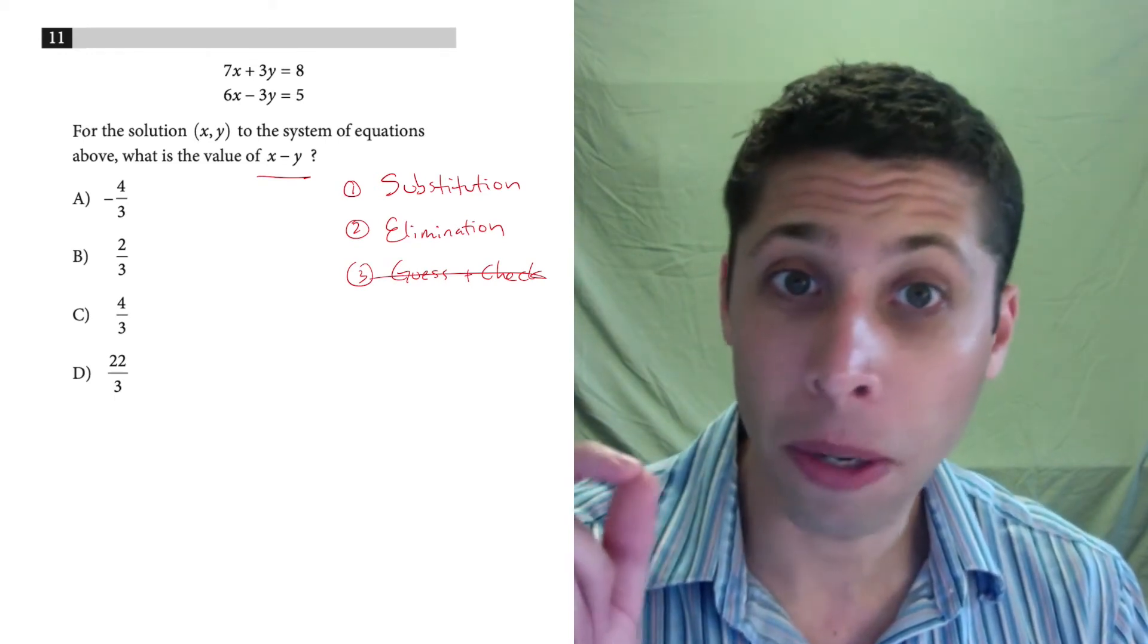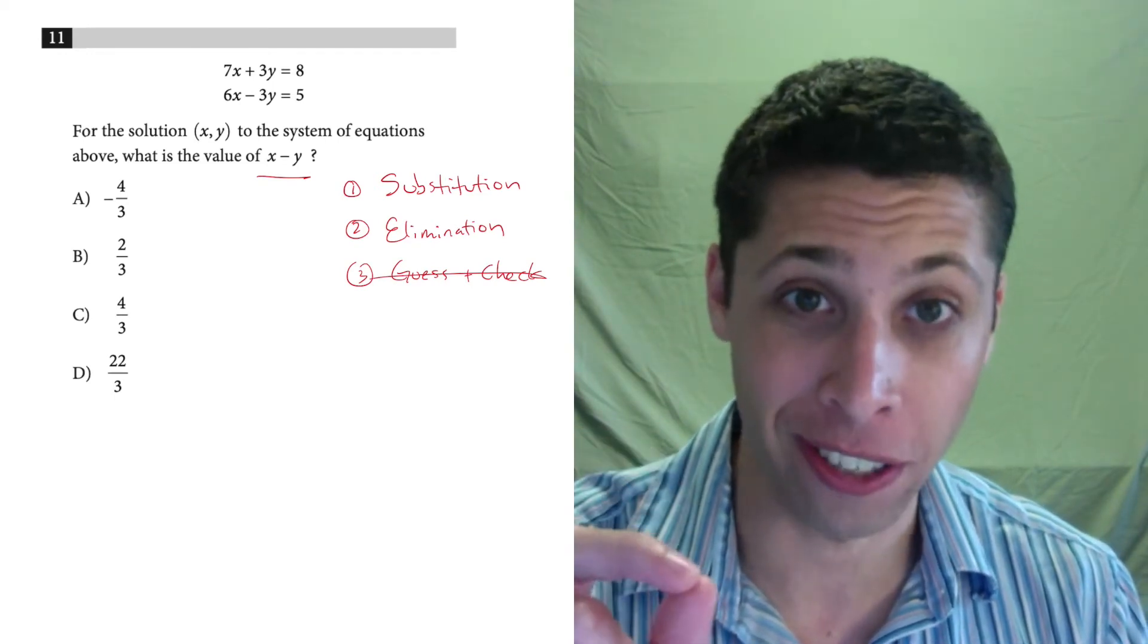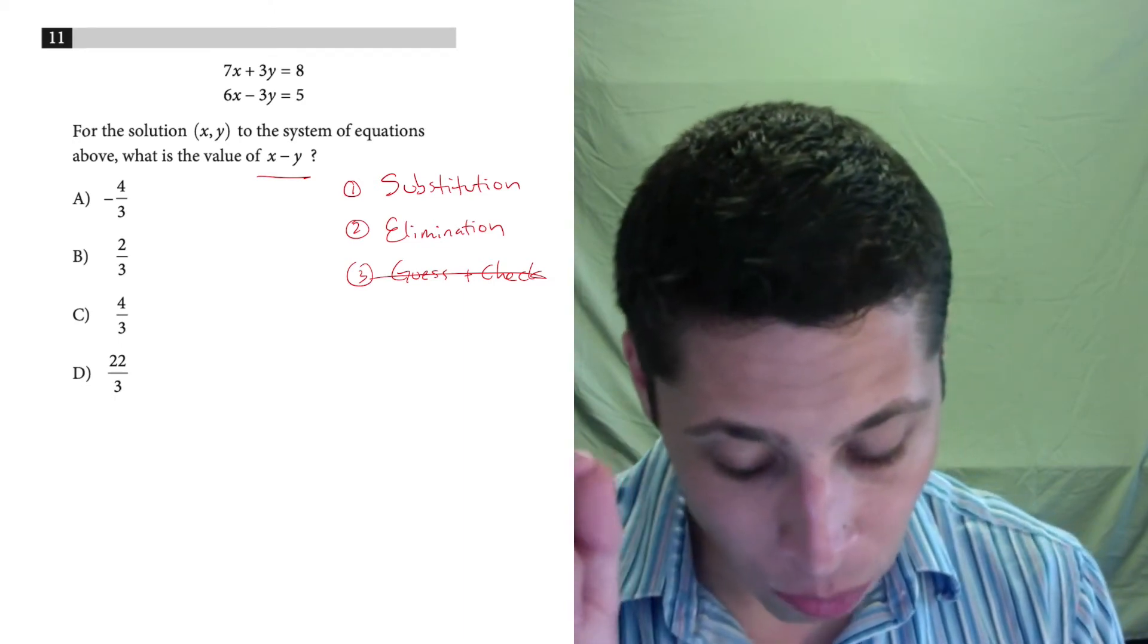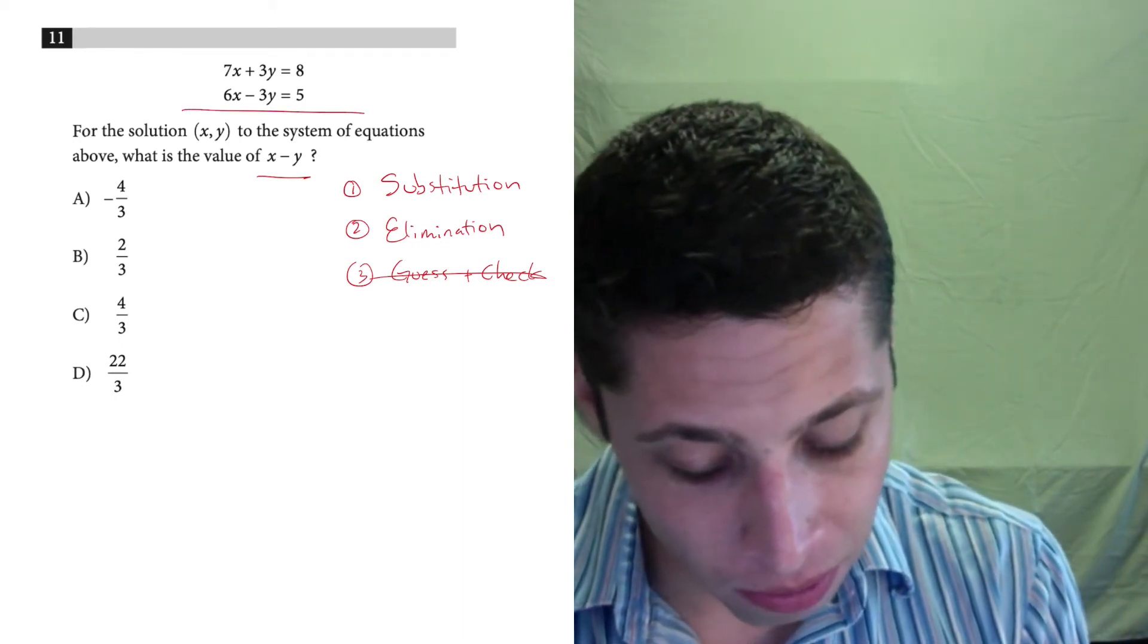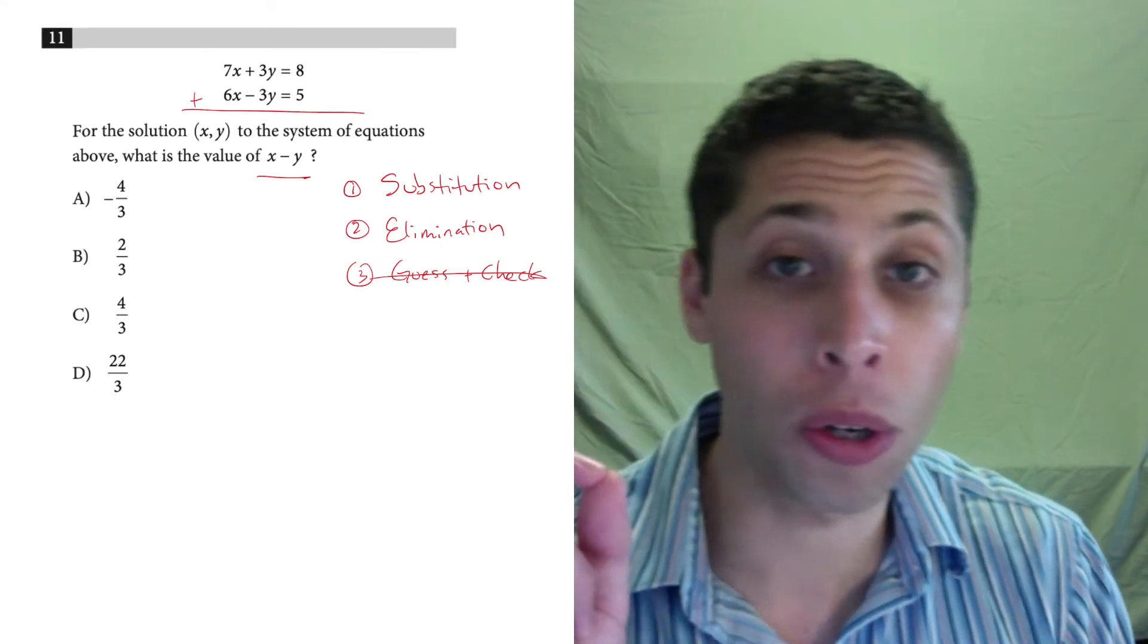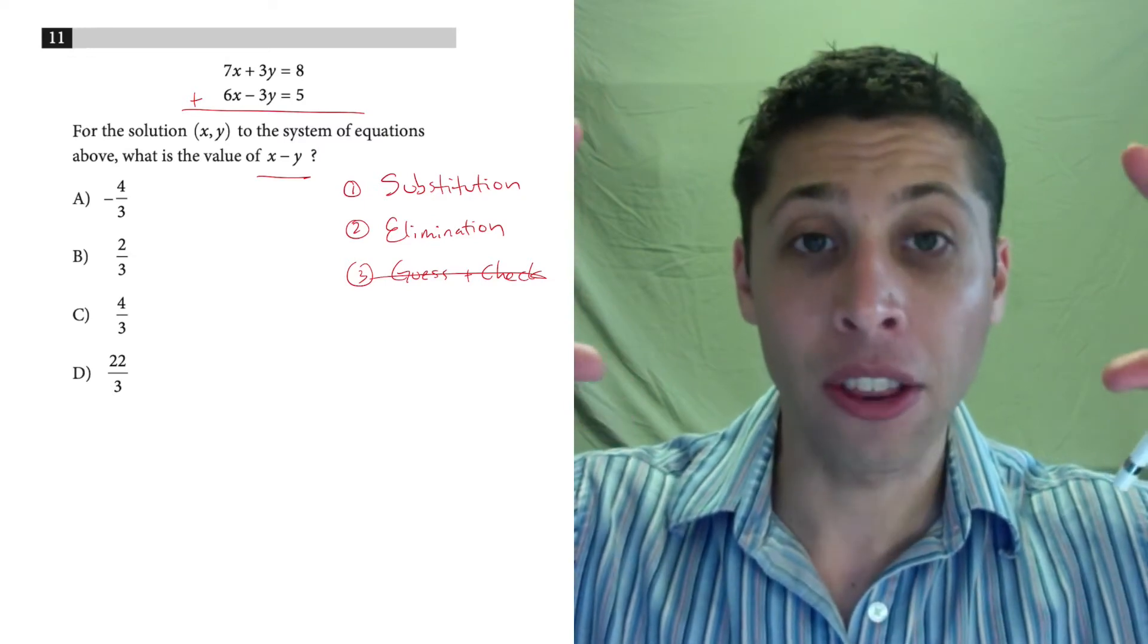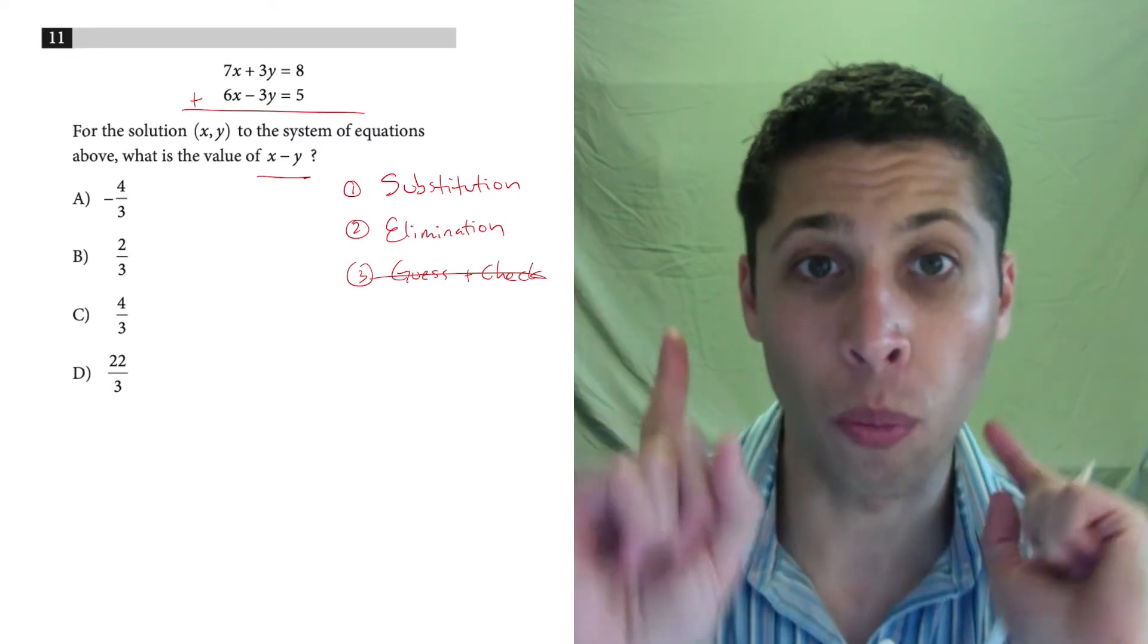Substitution could work, but it's way more efficient to do elimination. So let's look at what we do here. When we do elimination, we just add these two equations together. Our goal is to take two equations with two variables and turn them into one equation with one variable.